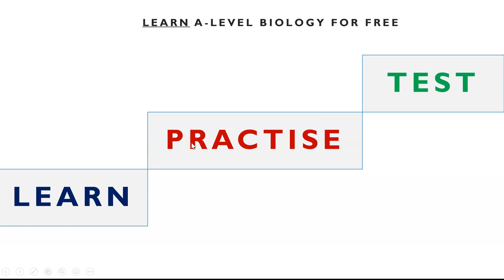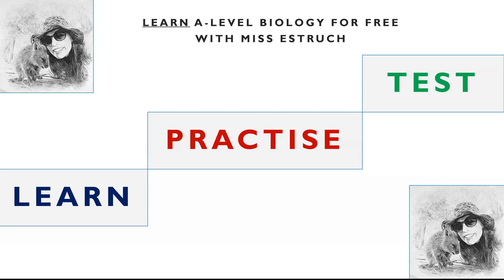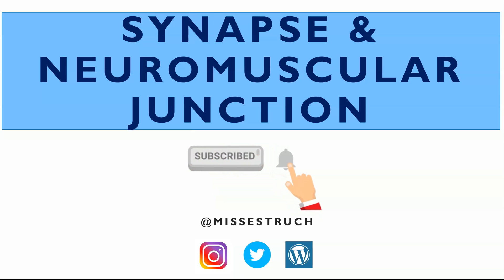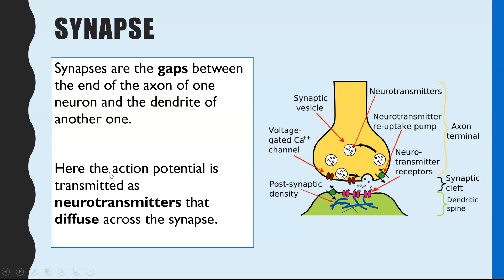Hello and welcome to learn A-Level Biology for free with Ms. Esterick. I'm going to be going through synapses and neuromuscular junctions in this video. If you are new here then click subscribe to keep up to date on the latest videos. So first of all, just a reminder from GCSE about what a synapse is — that is the gap between two neurons.